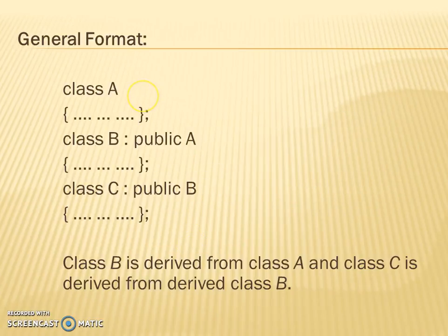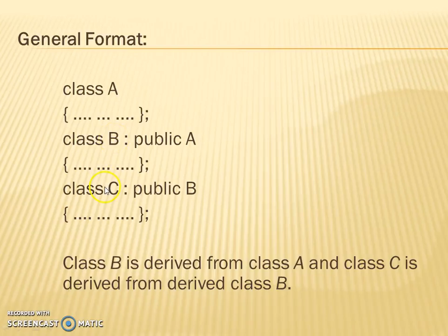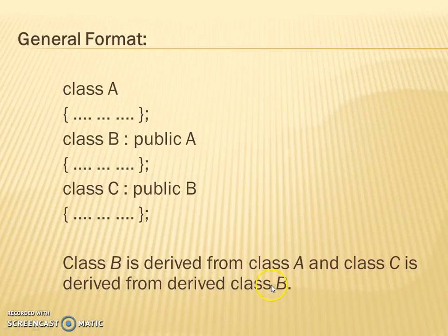In the general format of multi-level inheritance, we can see a class A. From class A, we derive one class B, and one more class C is derived from class B. Class B is also called an intermediate class. Class B is derived from class A, and class C is derived from derived base class B.